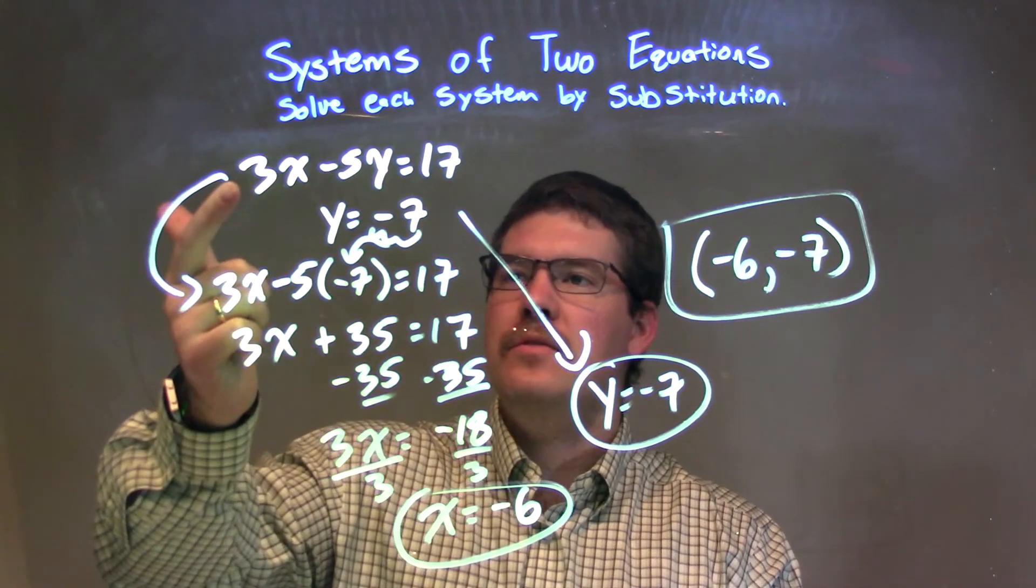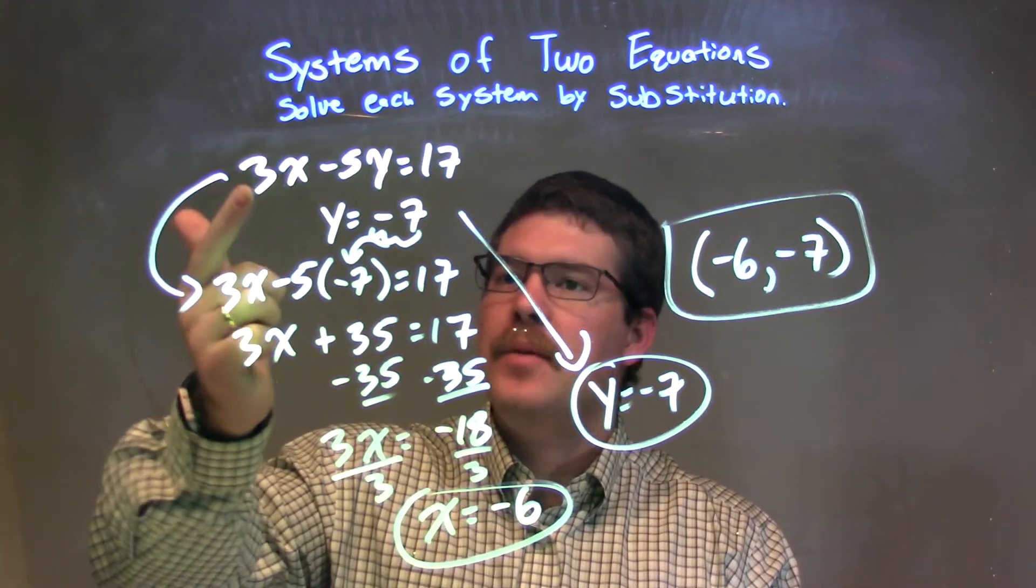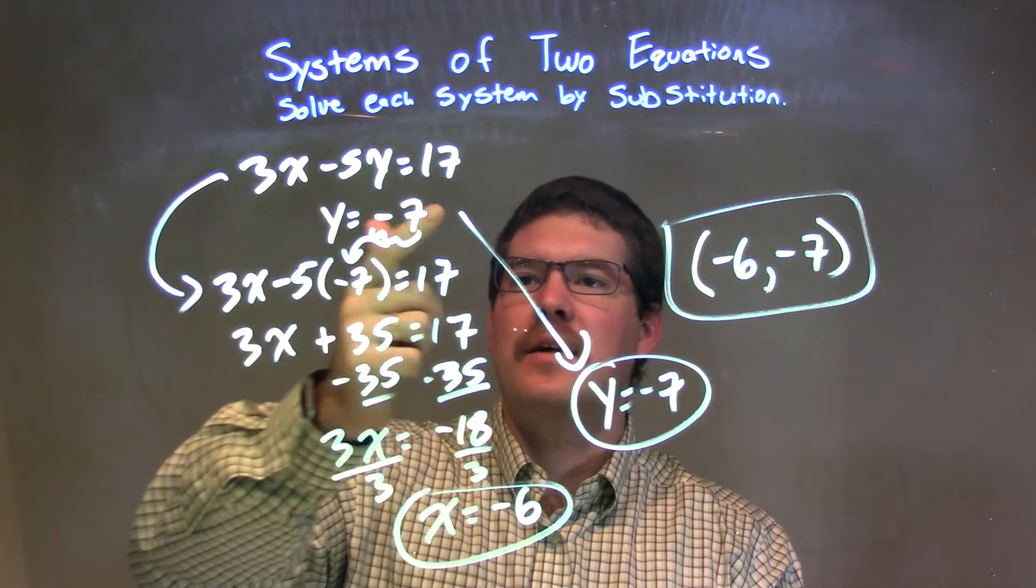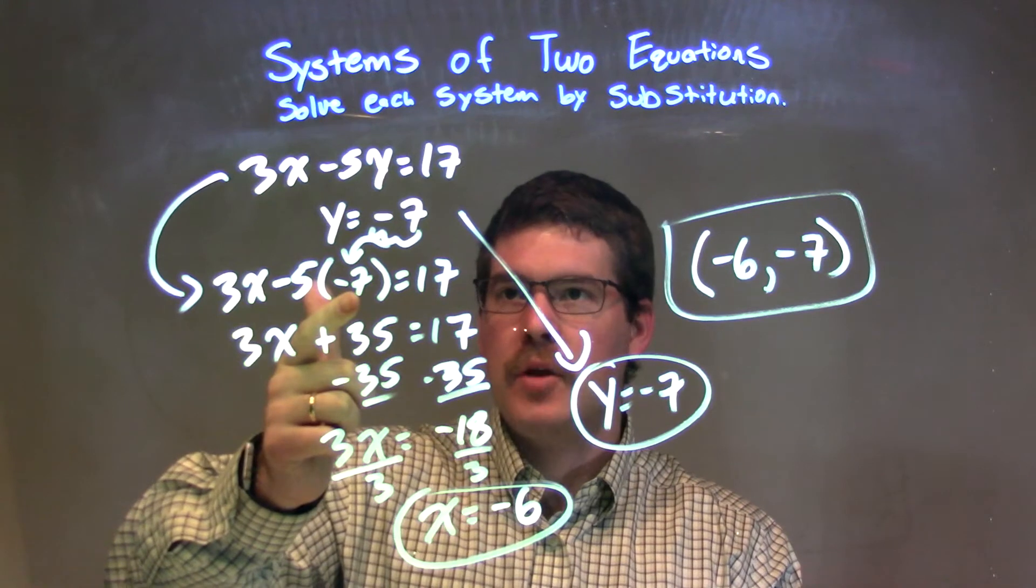So let's recap. We're given our two equations, 3x minus 5y equals 17, and y equals negative 7. I plug that knowledge of y equals negative 7 into my first equation's y.